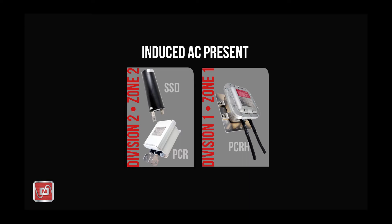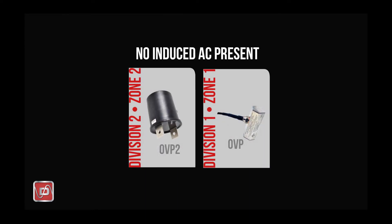If in doubt, assume that induced AC could be present in the future. I urge you to have this selection be your default to assure correct product operation under all conditions. There's no harm in selecting one of these products capable of AC mitigation even if there's no induced AC present, as the product will work correctly for this condition. If you're dealing with an application with no induced AC present, such as an airport jet fuel pipeline, one of the OVP products could be used. The important item to consider is whether or not the site has the potential to have induced AC. If the answer is yes, be sure to plan accordingly, as an incorrect selection could result in the device conducting CP current when you expected it to block CP.